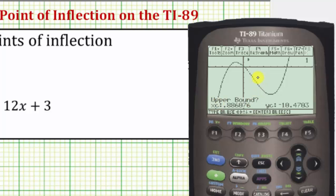Now it's asking for upper bound, so we must move the cursor to the right of the point of inflection. Let's press the right arrow. This does appear to be to the right of the point of inflection, so we'll press enter.